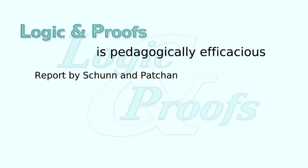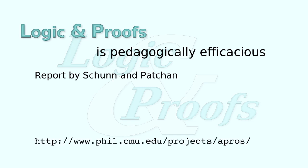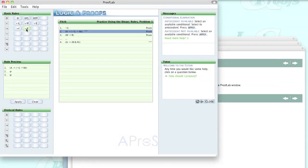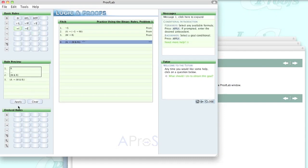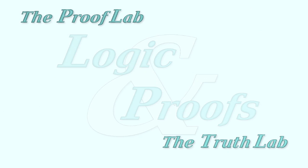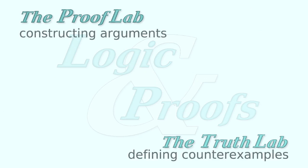These results are described in the report by Shan and Pachin that is available in the reference section of this site. The dynamic interaction between students and program is exemplified through the two most substantial applications used in the course: the proof lab and the truth lab. They support students in learning the two crucial skills — constructing arguments and defining counterexamples. David Lafon will describe in detail the working of the proof lab, and Dawn McLaughlin will do the same for the truth lab.